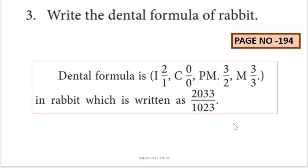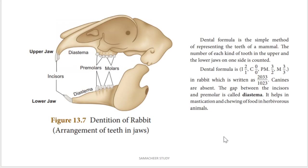The upper jaw teeth count is 2, 0, 3, 3 and the lower jaw is 1, 0, 2, 3. This gives the dental formula. Refer to page number 194 for the dentition of rabbit figure. In the upper jaw you can see 2 incisor teeth, lower jaw has 1 — that is why the ratio is 2 over 1.